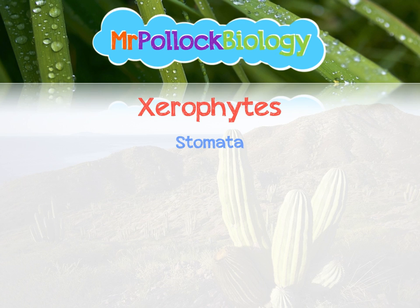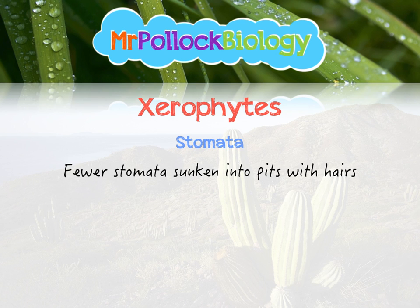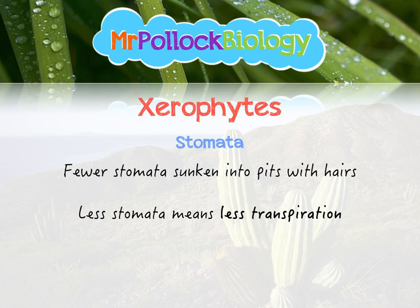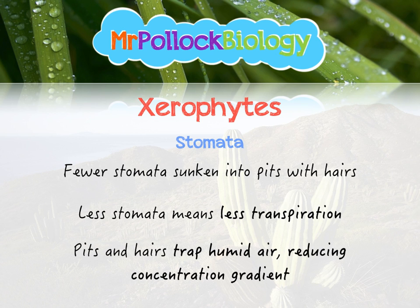We can see adaptations in stomata. Xerophytes will have fewer stomata, and they're sunken into pits with hairs. If we've got fewer stomata, less transpiration is going to occur. The pits and hairs trap regions of relatively high humidity, keeping moist air close to the stomata and reducing the concentration gradient between the leaves and the environment — so less transpiration will occur.